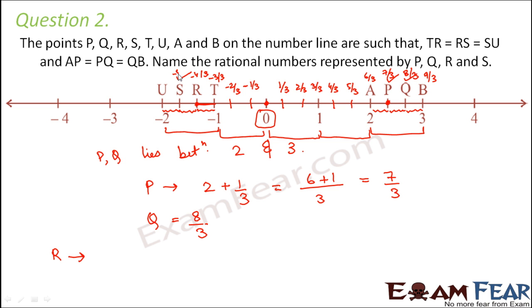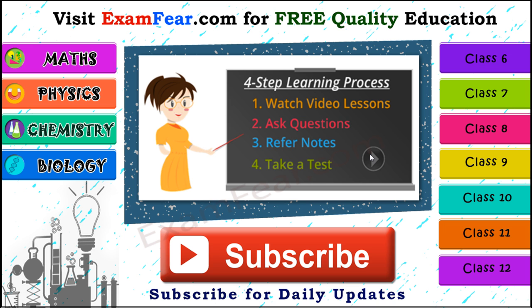S would be minus 5 by 3. So basically R is minus 4 by 3 and S is minus 5 by 3. So in this fashion we found out the rational numbers represented by P, Q, R and S. Thank you.